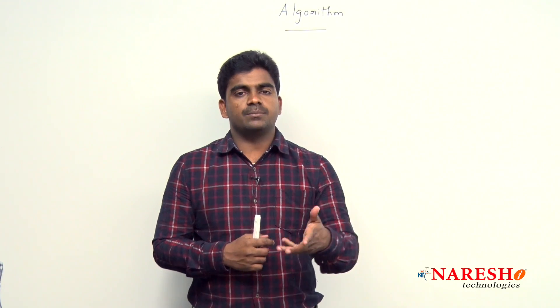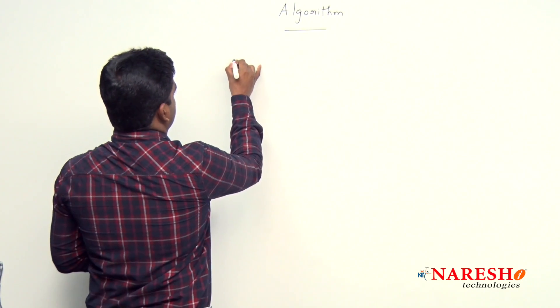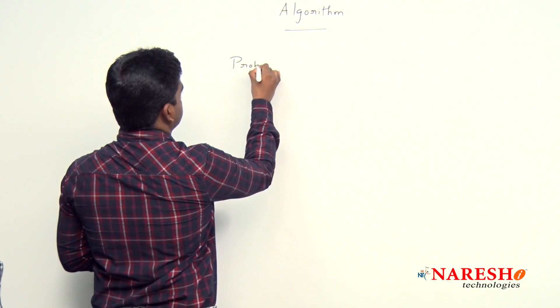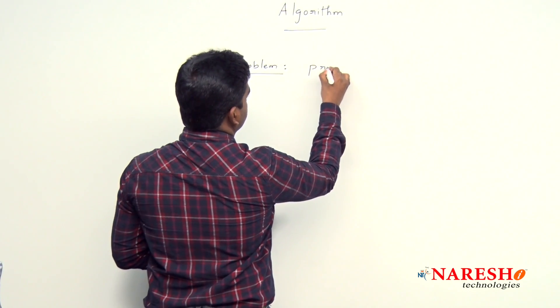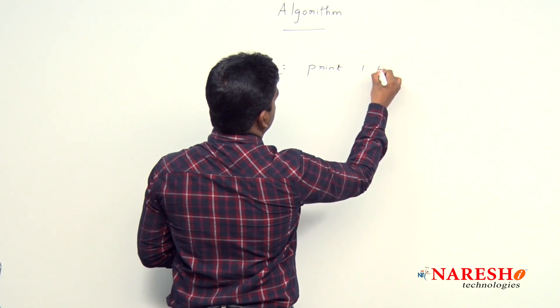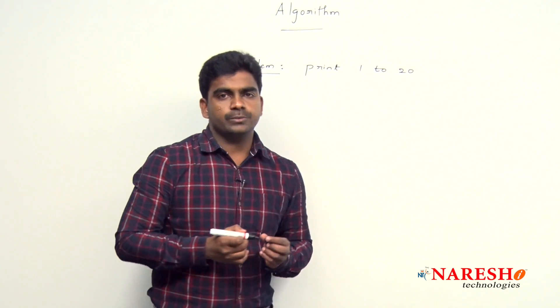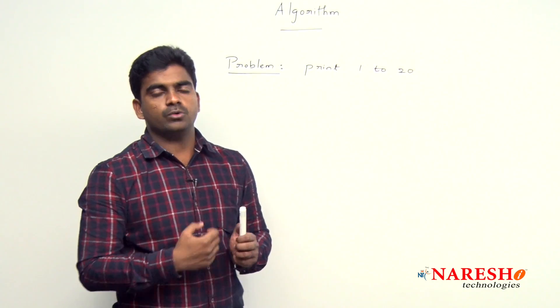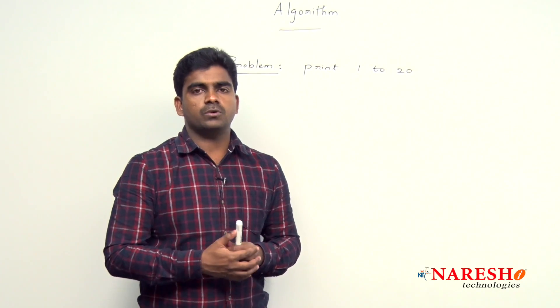With one general example, I am going to explain. Suppose this is the problem: printing 1 to 20. How to print, how to display the numbers 1 to 20, the computer problem, how to solve.